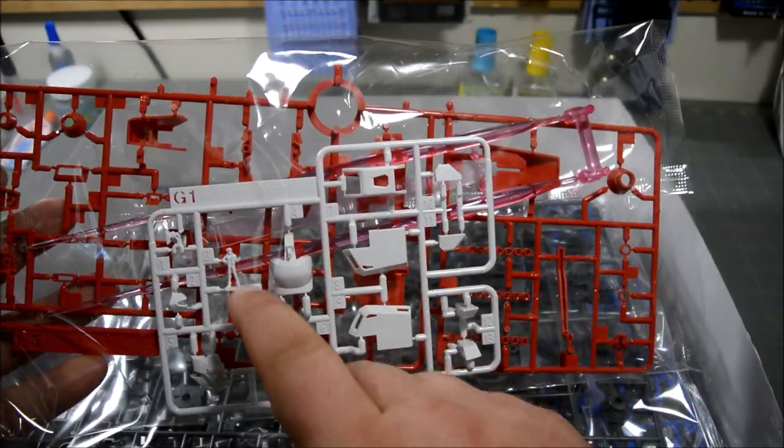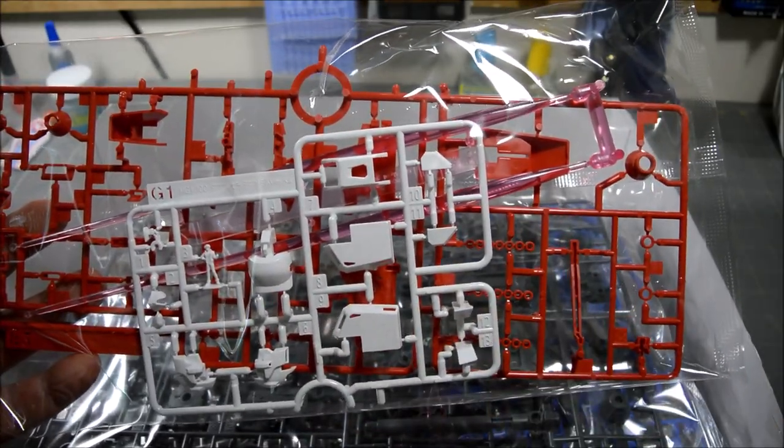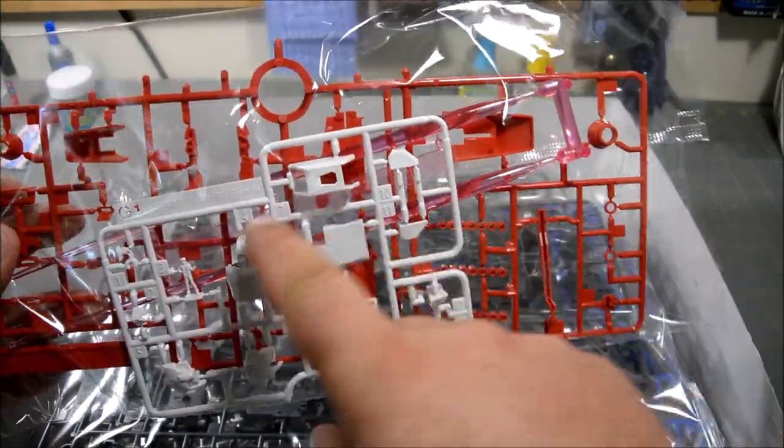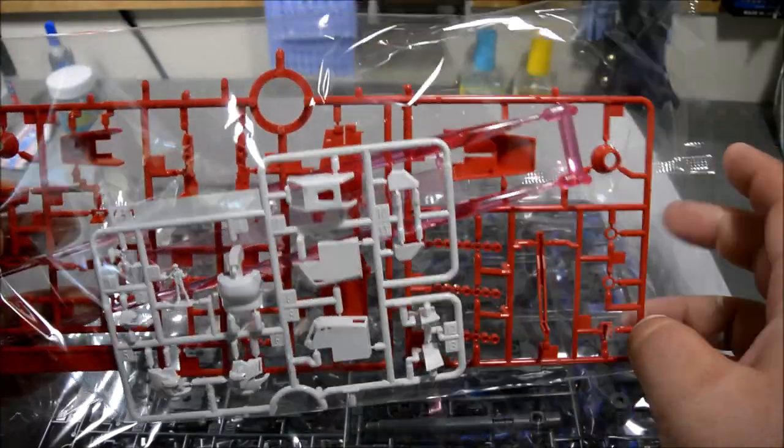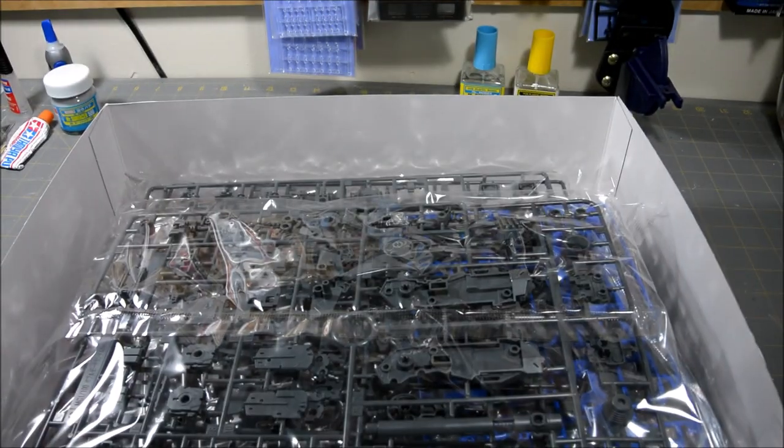There's some white parts that won't be duplicated, so front skirts, the head, the pilot figures, a few little parts for various things here and there. Also in there is the beam sabers, and if I'm not mistaken I think that's the same beam saber effect part used on the Perfect Grade RX-78 Gundam.